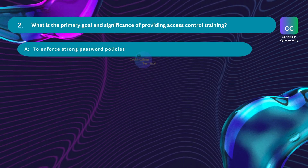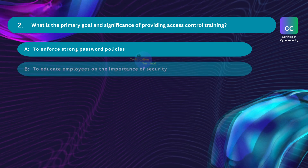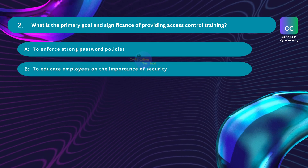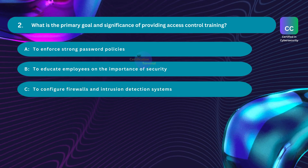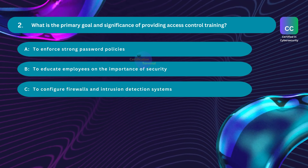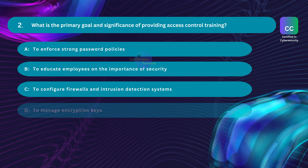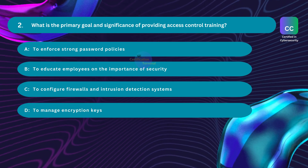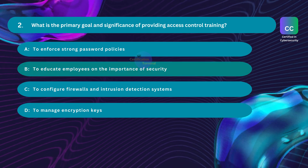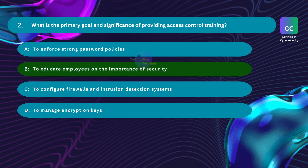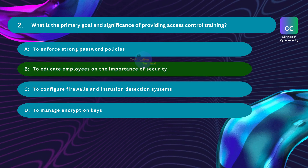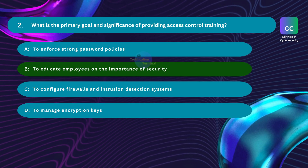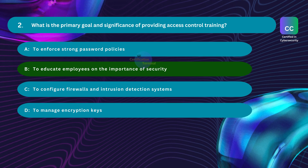Question number two: What is the primary goal and significance of providing access control training? Option A: to enforce strong password policies. Option B: to educate employees on the importance of security. Option C: to configure firewalls and intrusion detection systems. Option D: to manage encryption keys. The correct answer is Option B: to educate employees on the importance of security. Access control training aims to educate individuals on securing digital assets, information systems, and networks.